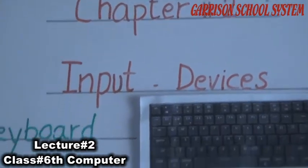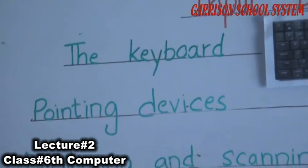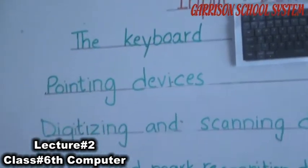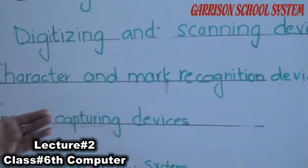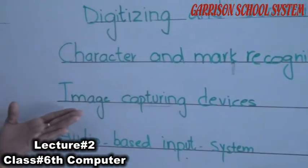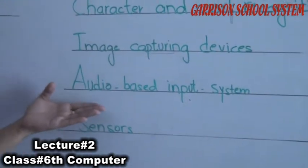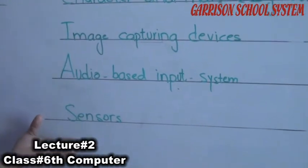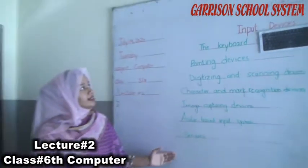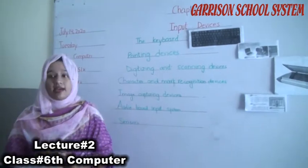In this chapter, we will understand the following topics: keyboard, what are pointing devices, what are sizing and scanning devices, character and mark recognition devices, image capturing devices, audio-based input systems and sensors. These are all the things we will cover in chapter 2 on input devices.